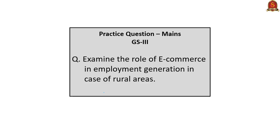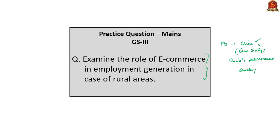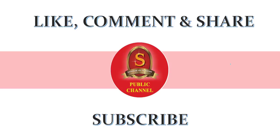The final practice mains question is: 'Examine the role of e-commerce in employment generation in rural areas.' An answer should include points from the article, with or without special reference to China as a case study. Draw on how China achieved inclusive growth using e-commerce, and list the challenges to substantiate that generating employment is not the only primary issue. With this, we come to the end of today's analysis. Please like, comment, share the video, and subscribe to Shankar IAS Academy for latest updates. Stay focused and motivated.